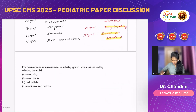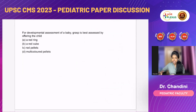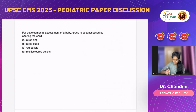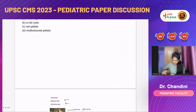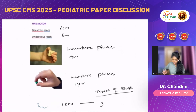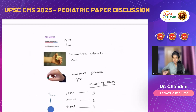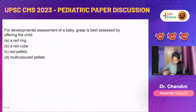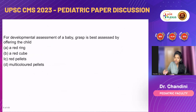Next question: for developmental assessment of a baby, grasp is best assessed by offering the child — a ring, a cube, a pellet, or multicolored pellets? As shown in class, for the immature pincer grasp you offer a cube, whereas for the mature pincer grasp you offer a pellet. So the appropriate answer for assessing grasp is a red cube — option B is the right answer.